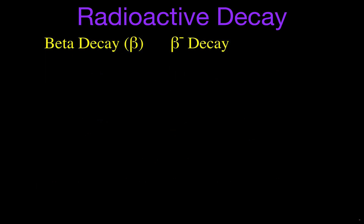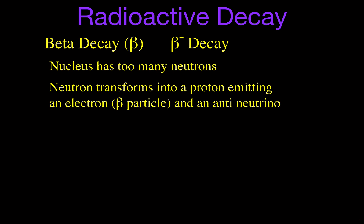Now we're going to go over beta decay, and there are two kinds. Beta minus occurs in atoms where there are too many neutrons — a neutron-rich environment. What happens is a neutron transforms into a proton, and when that occurs, it emits an electron, which is the beta particle, and an electron anti-neutrino. That part of the equation — the neutron turning into a proton, emitting an electron and an anti-neutrino — looks like that.